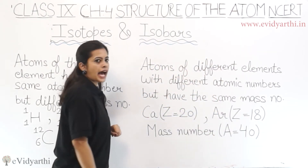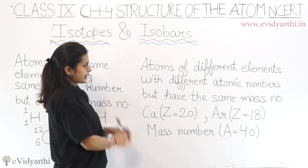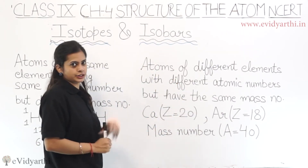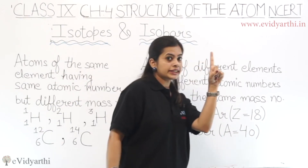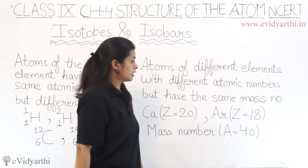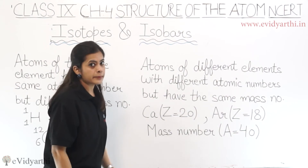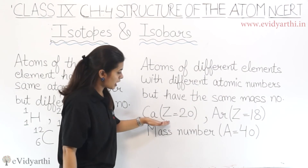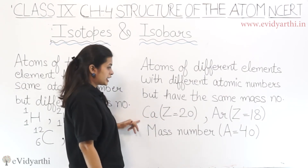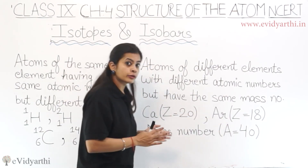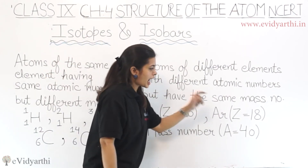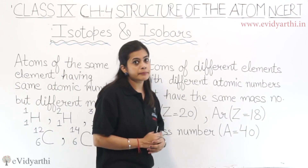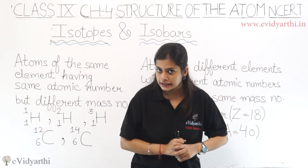Next we'll come to isobars. What are isobars? Atoms of different elements having different atomic numbers. So to remember: different element, different atomic number, but they will have the same mass number. Now, since the elements are different, the example I have taken here is calcium and argon. Both have different atomic numbers — one is 20, argon has atomic number 18 — but they have the same mass number, that is 40.